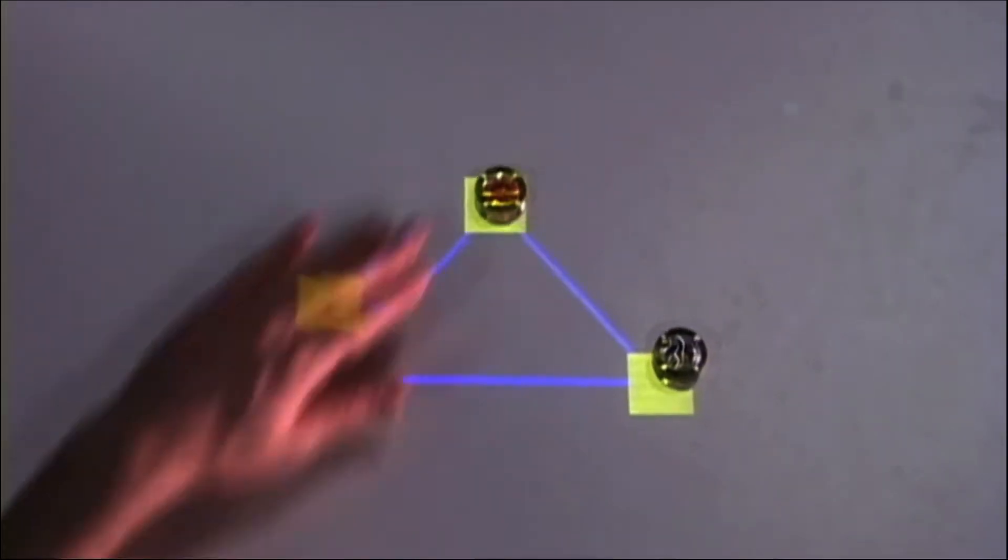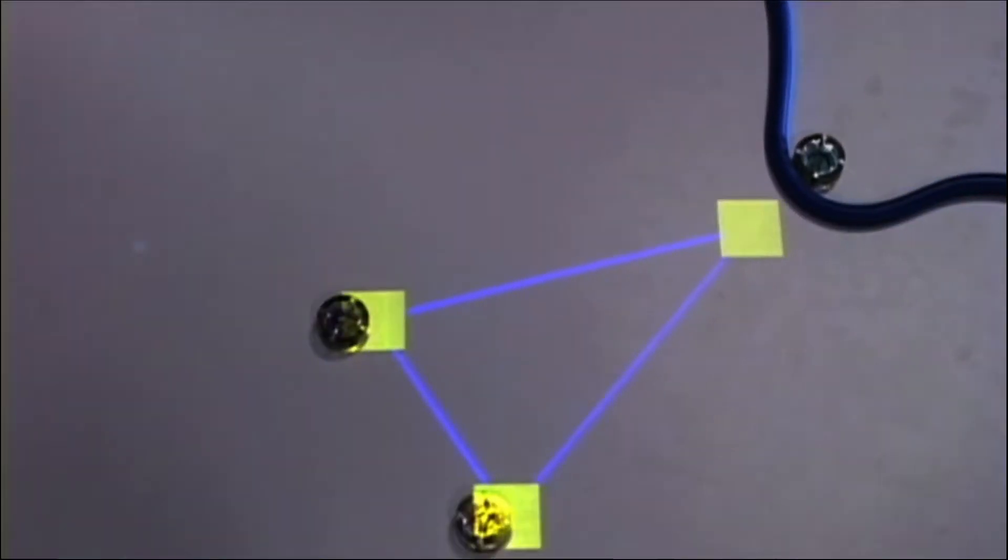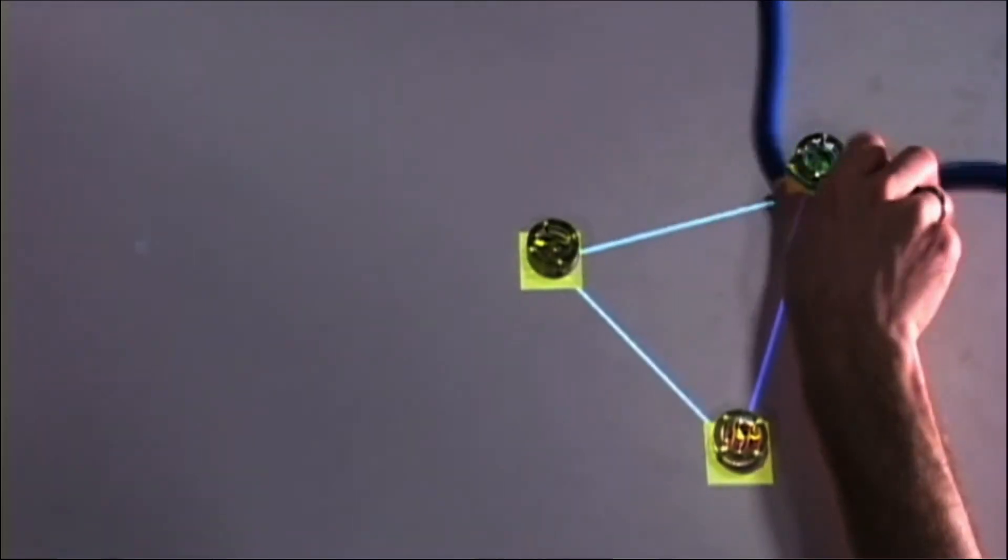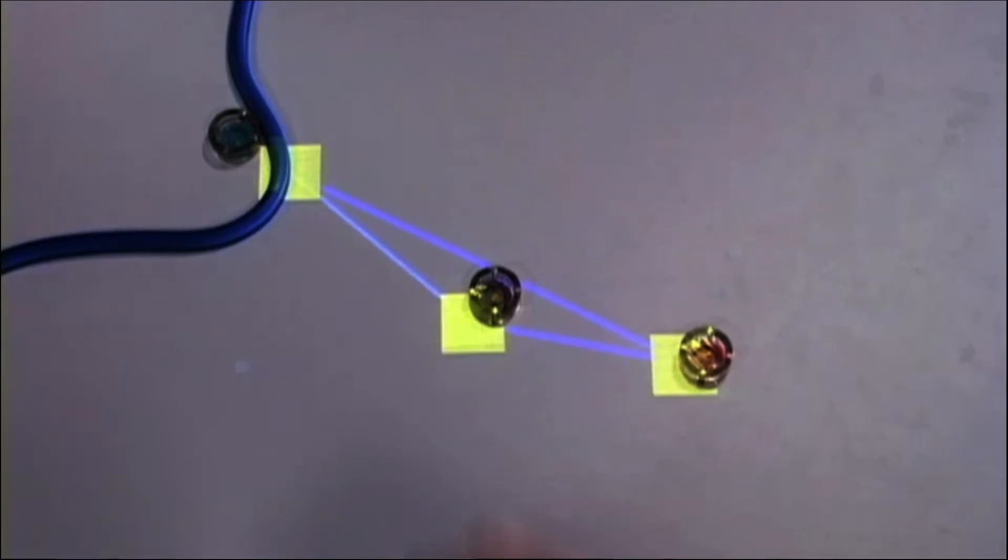So I built this table that moves objects around on top of it using an array of electromagnets. The computer collaborates with you to try to help you perform whatever task you're doing. In this case, we're trying to make an equilateral triangle. But you can reach in and guide that process however you want with your hands.